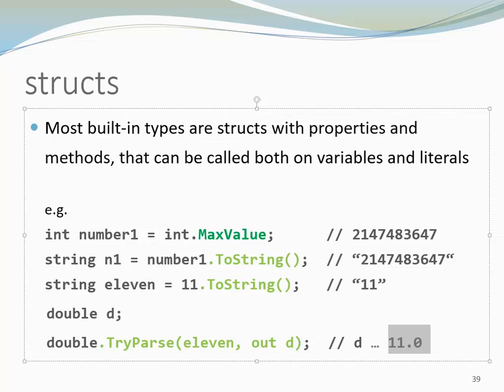Now if I would have passed a different string, let's say helloWorld, then tryParse would have returned false because helloWorld cannot be converted to a double.